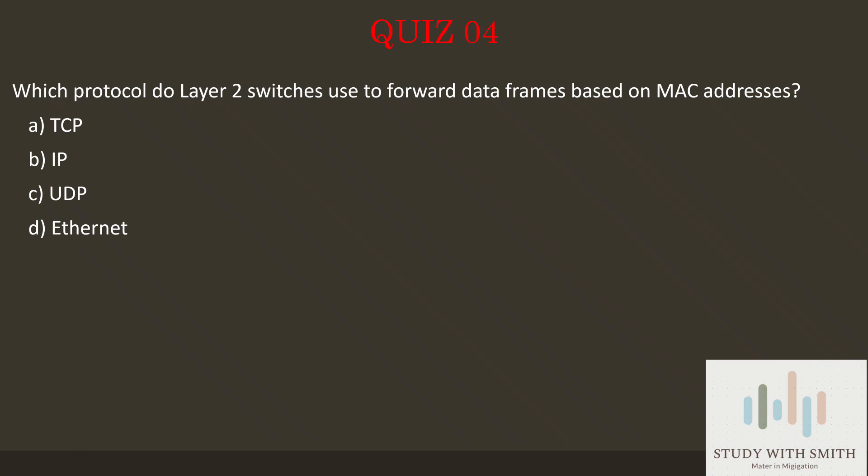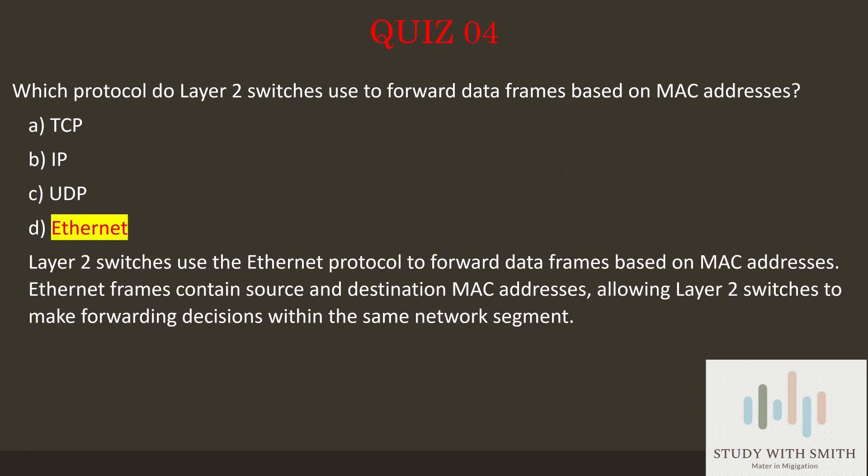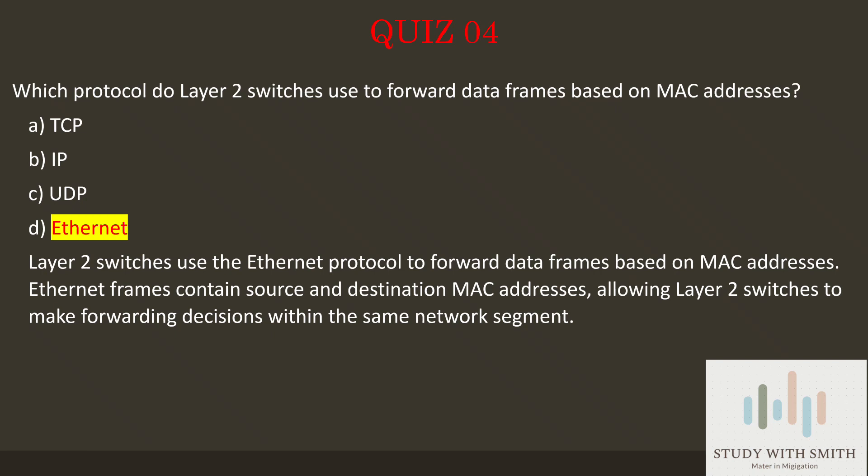The answer is D — Ethernet. Layer 2 switches use the Ethernet protocol to forward data frames based on MAC addresses. Ethernet frames contain source and destination MAC addresses, allowing Layer 2 switches to make forwarding decisions within the same network segment.